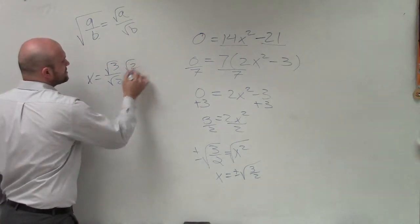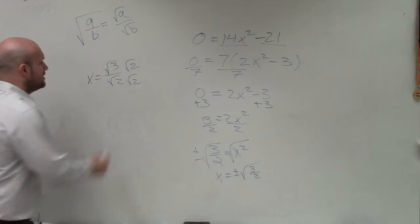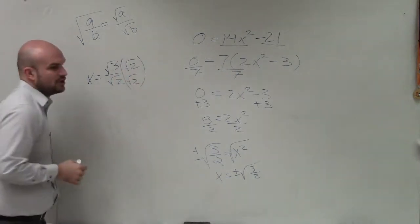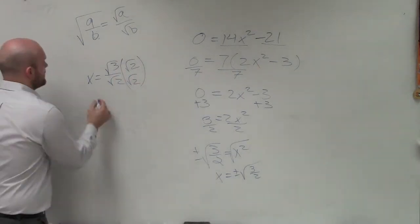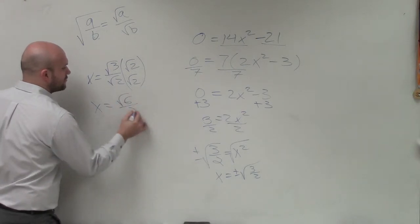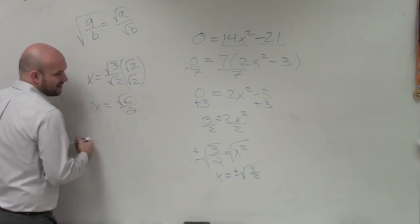So what we can do is multiply by √2 on both sides, which is called rationalizing our denominator. Then I have √6/2 as my final answer.